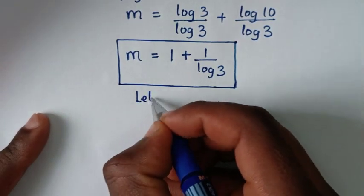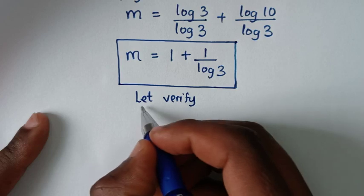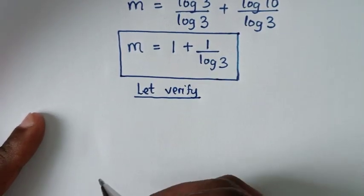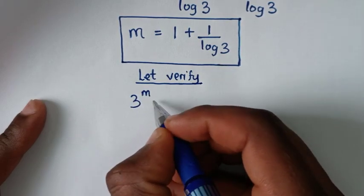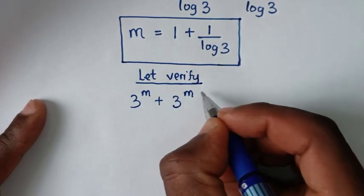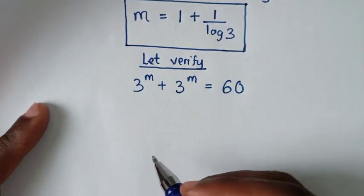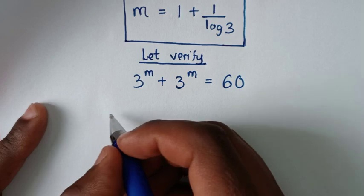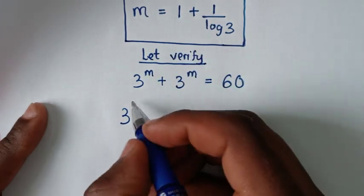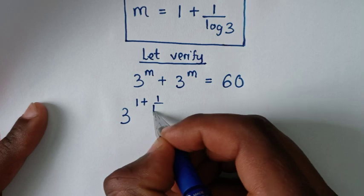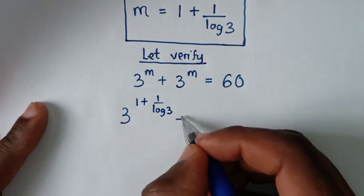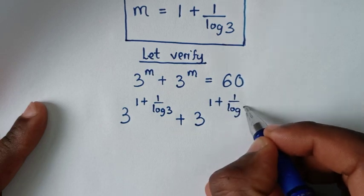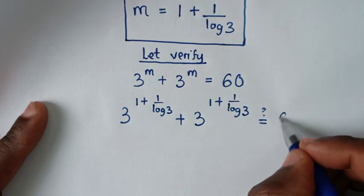Now let's verify our answer. Going back to the original problem — 3 power of m plus 3 power of m equals 60 — we substitute the value of m. So it becomes 3 power of (1 plus 1 over log 3) plus 3 power of (1 plus 1 over log 3). Is this equal to 60?